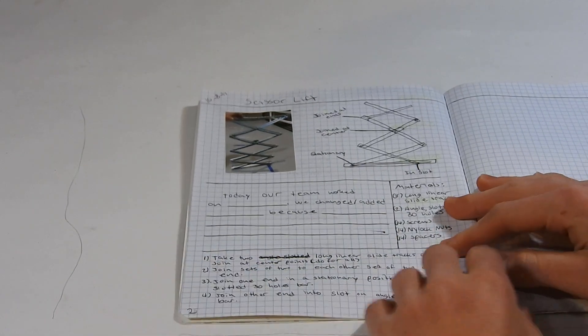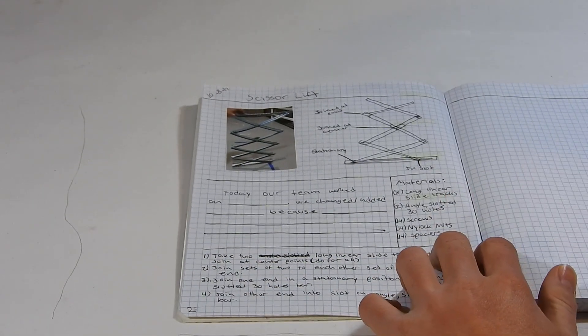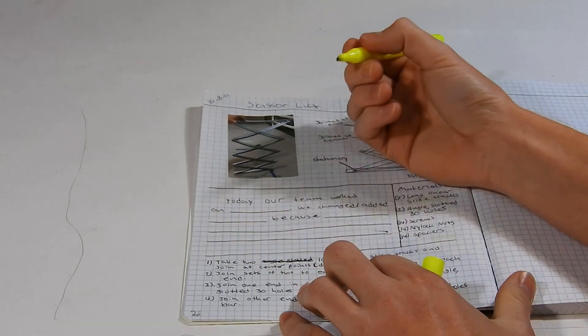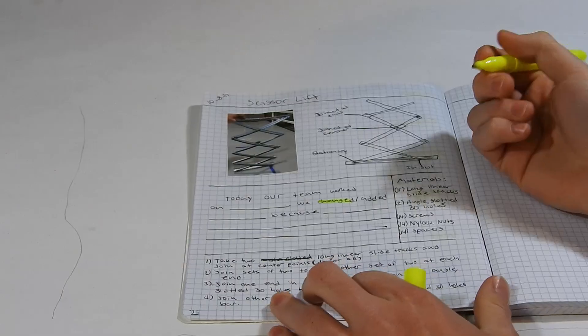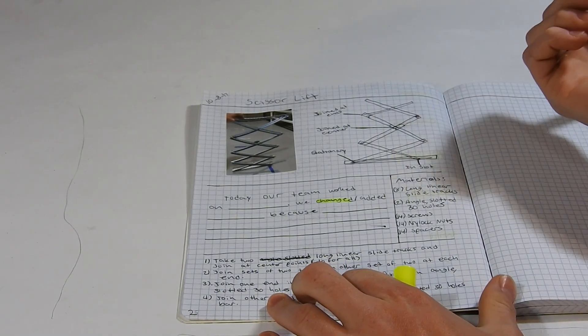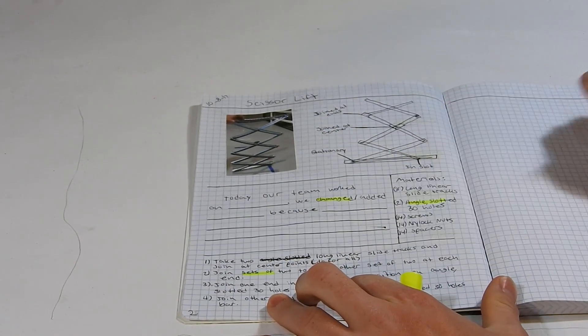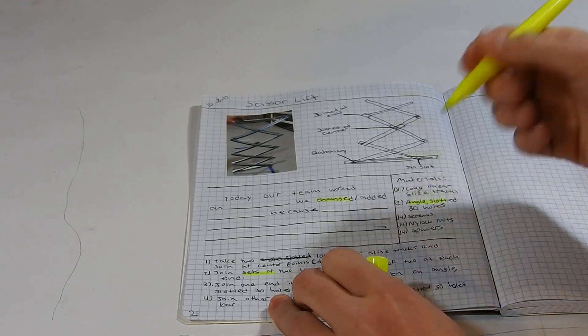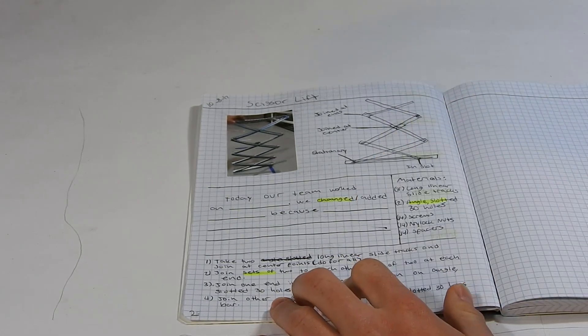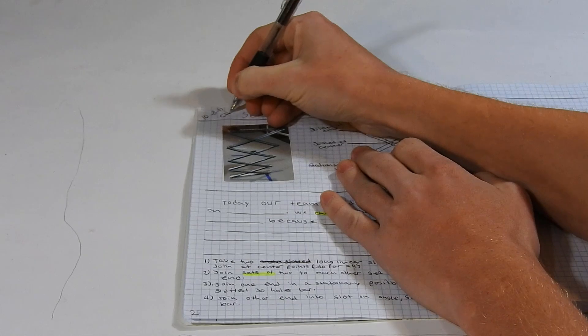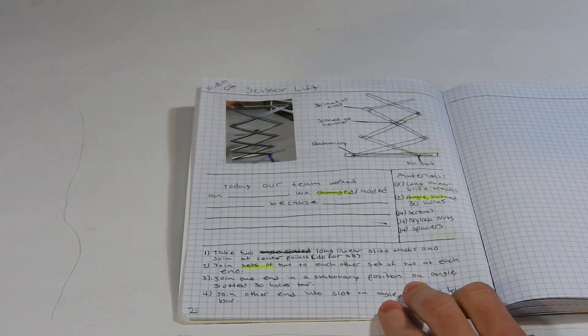Now that we have the final information on our page, we are going to take a highlighter and highlight keywords that stand out when somebody, like a judge, is viewing your notebook, and they don't want to read through everything. They can just see the highlighted words and understand what's on the page. And then you're going to initial your page. That's it for Robotics Engineering Notebook.